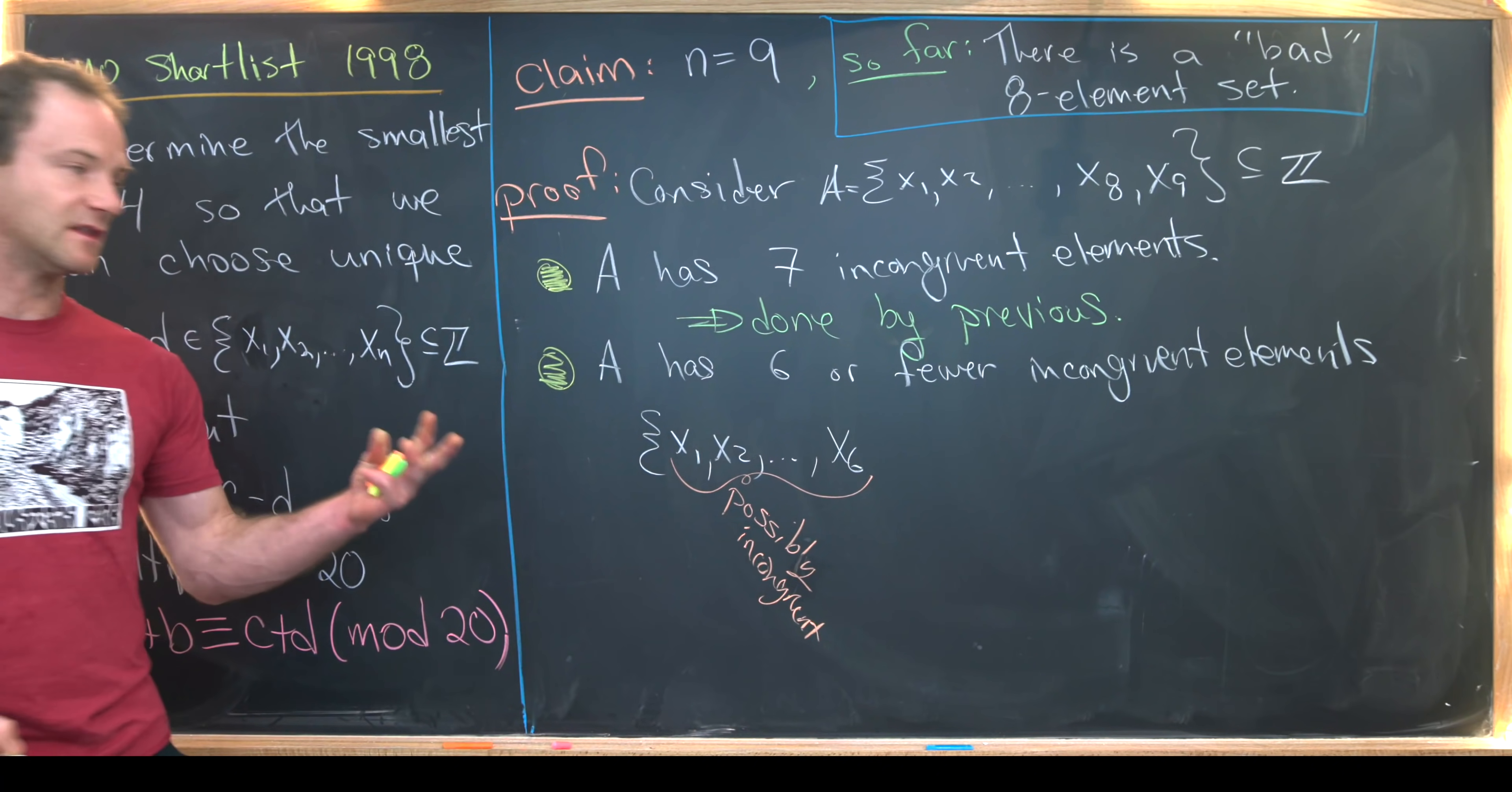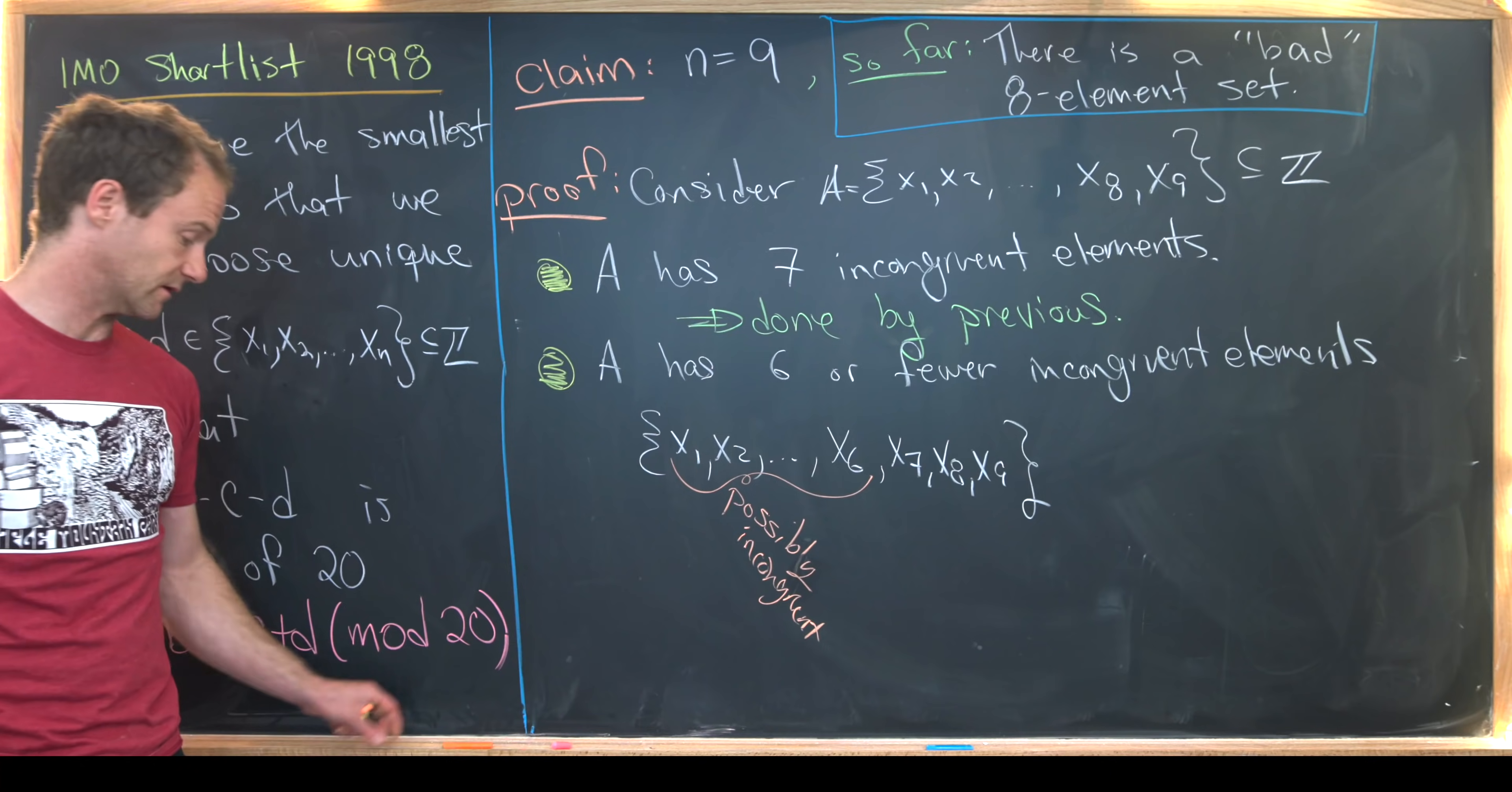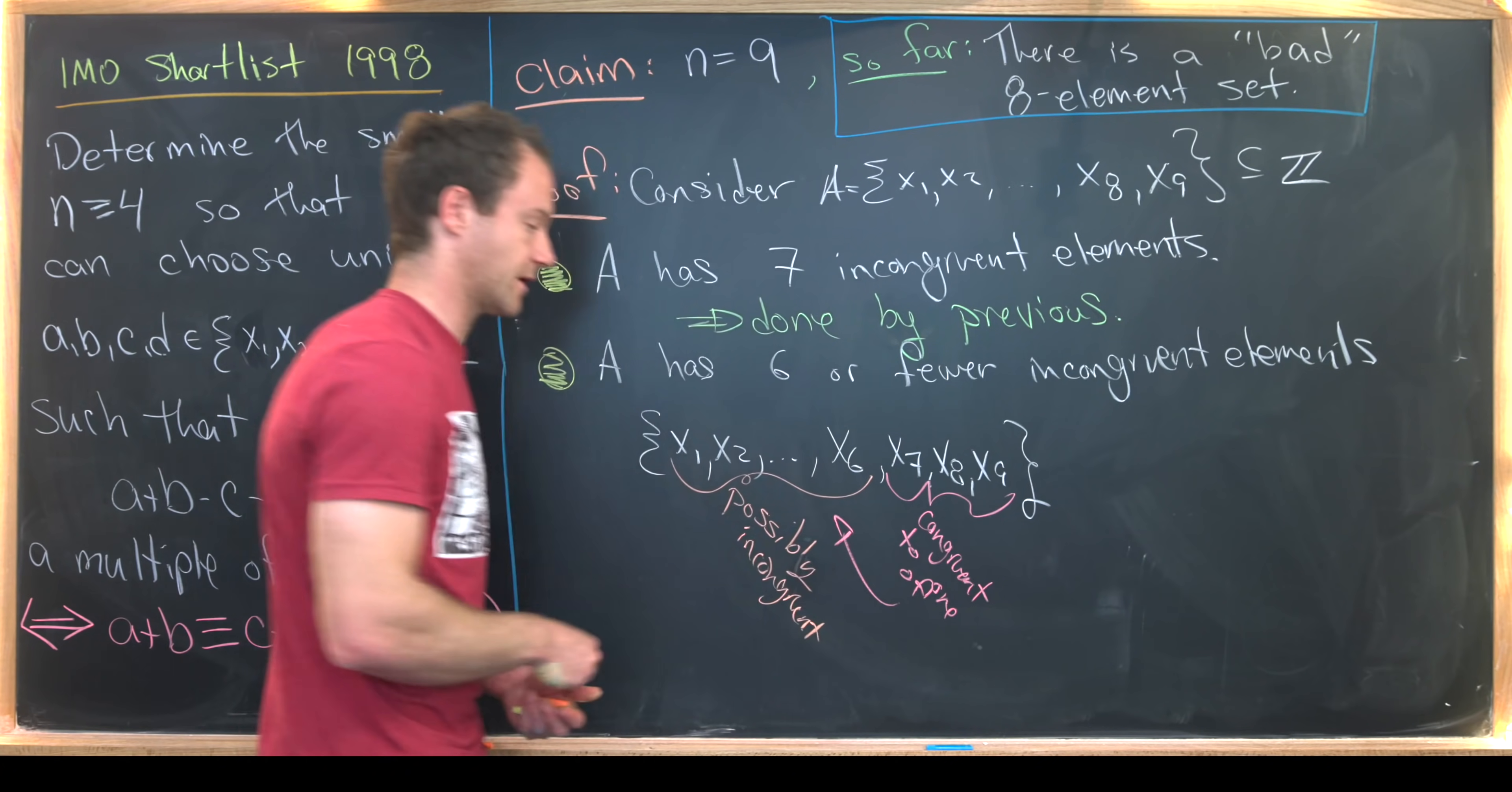And then the last three, so that would be x7, x8, and x9 are the ones that are congruent to earlier in the list. So let's write that. So congruent modulo 20 to one of these over here.